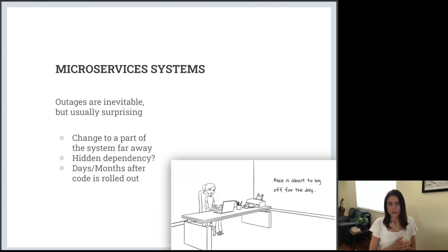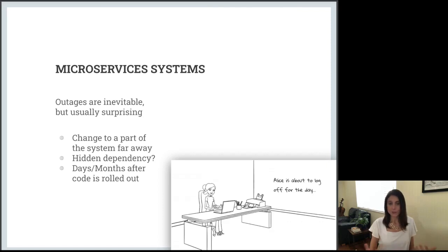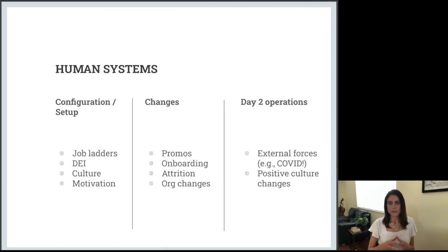An important point about incidents is that they can actually happen days or months after the code is rolled out, and they can hit at any point in time. Take Alice as an example: she's on call for the billing system, everything has been going fine, but a new recommender algorithm has had a negative impact after a while on a hidden dependency, which is now impacting her system. Maybe Alice has just put in a full day's work, is tired and just about to go home — and then an alert fires. That really leads us to a discussion about how human systems actually impact the health of our microservices systems.